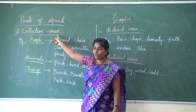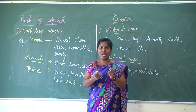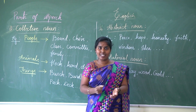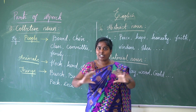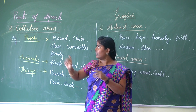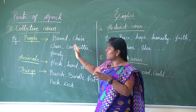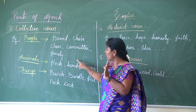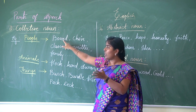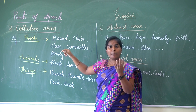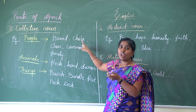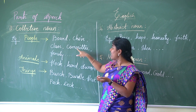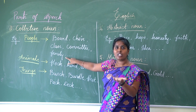Next, collective noun. Imagine you have a lot of sticks in your house — you collect all the sticks and bundle them. Where you collect everything and put it into one group, that is known as collective noun. Certain words are used for people: board, choir, class, committee, family. For example, board of committee, choir of singers, class of students, committee of judges, family of members.